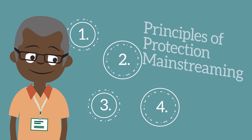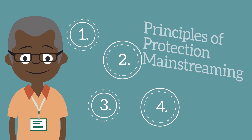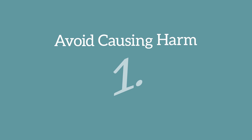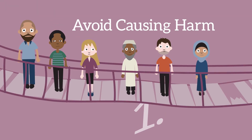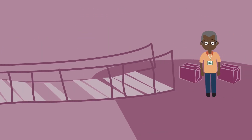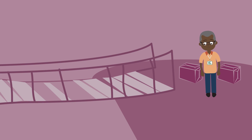All of these unjust events can be combated by the four principles of protection mainstreaming. One: avoid causing harm. Prevent and minimize as much as possible any unintended negative effects of your intervention — anything that could increase people's vulnerability to any physical or psychological risks. Always prioritize safety and dignity.